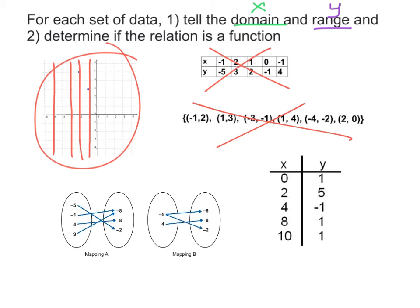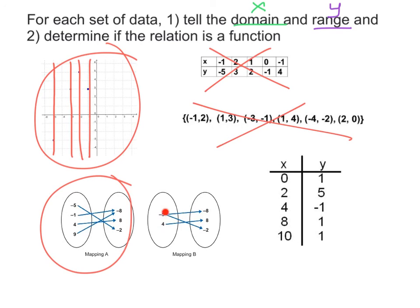Looking at the mappings: mapping A first. If I ordered these meals, am I charged anything unfairly? No, I am not. This is fair, so it is a function. And this other mapping — if I ordered value meal negative 5, I was charged negative 8. If somebody else also ordered negative 5, they were charged negative 2. This is not okay, so it is not a function.